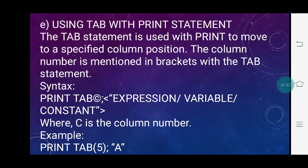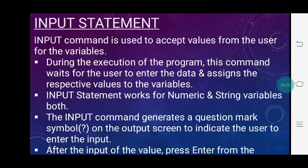Using tab with the print statement: the tab statement is used with print to move to a specified column position. The column number is mentioned in brackets. The syntax is: print tab(c); expression, where c is the column number. For example, print tab(5); "a" — after running the program, it will display 'a' after 5 tab spaces on the output screen.